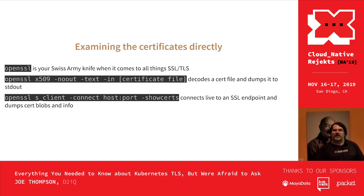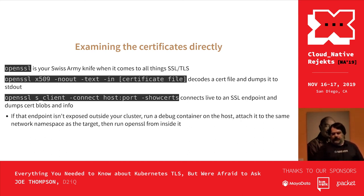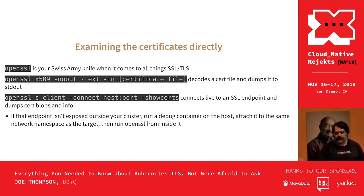If you don't have access to the actual file but want to decode what might be going wrong with a connection, OpenSSL has an SSL client that will connect to whatever host and port you give it. The -showcerts flag dumps out the certificate blobs, which you can pipe to openssl x509 to decode. If the endpoint isn't exposed outside your cluster, run a debug container — I used Alpine for it. Just run an Alpine container, apk add openssl, and you're in business.